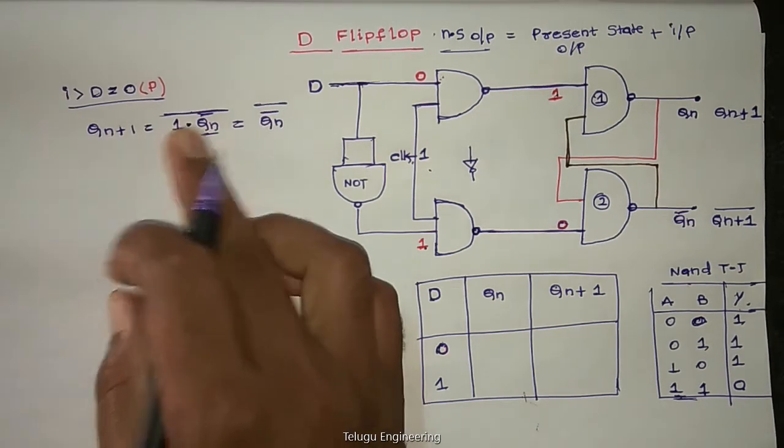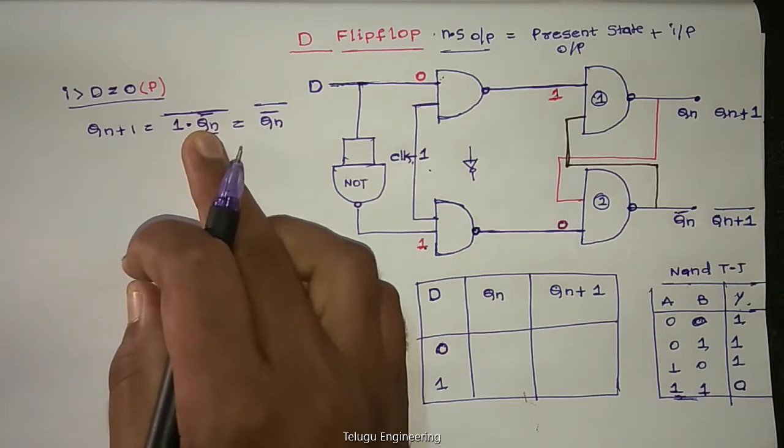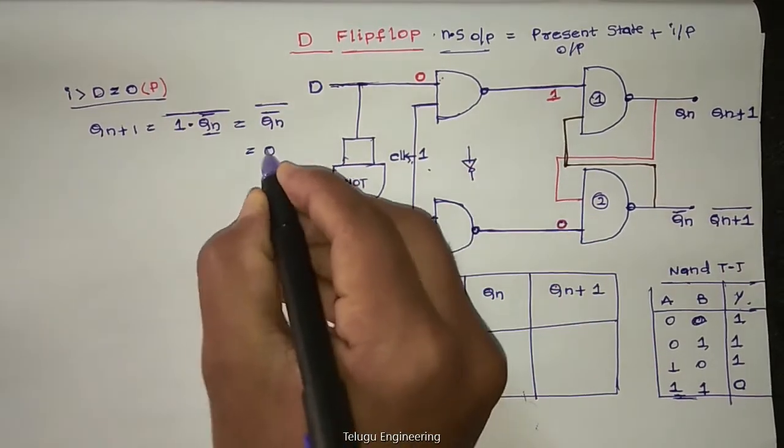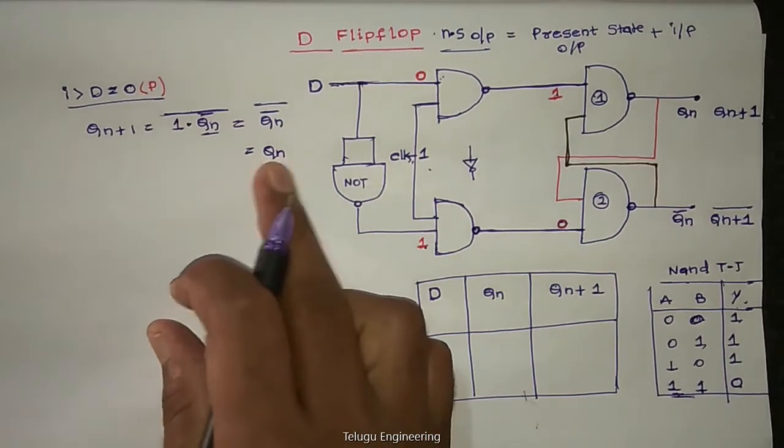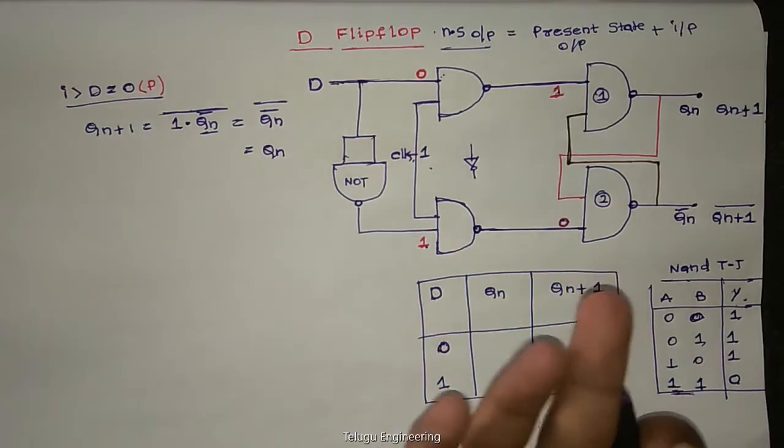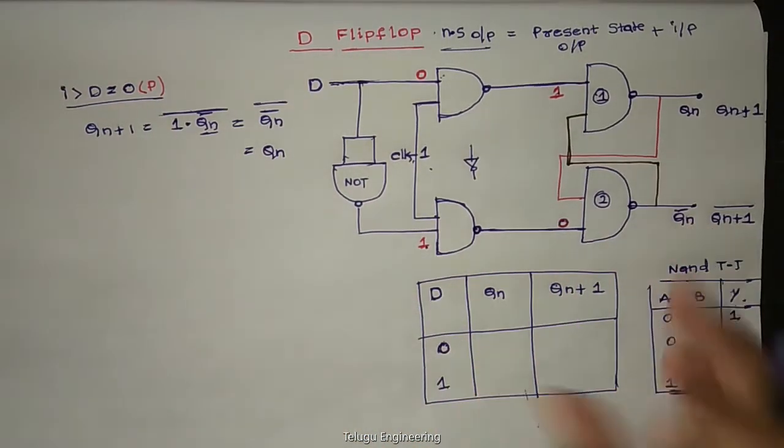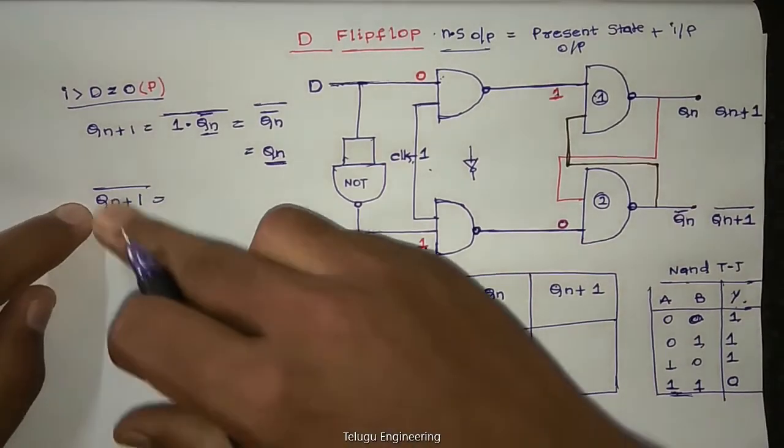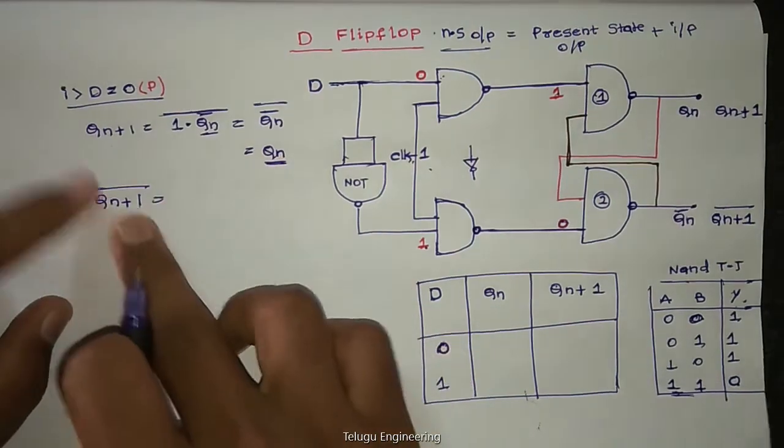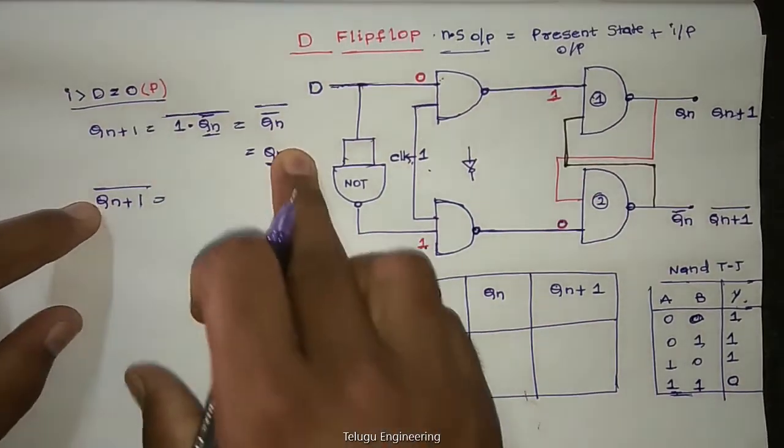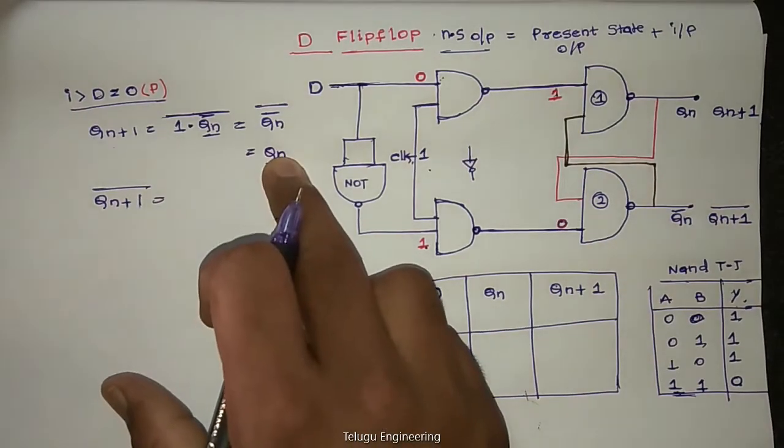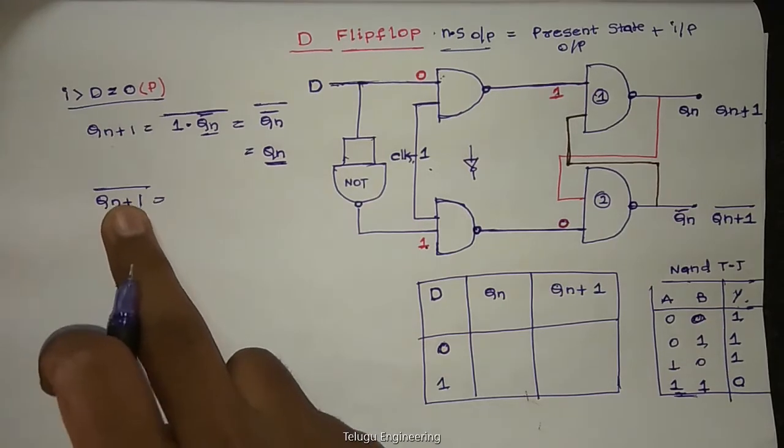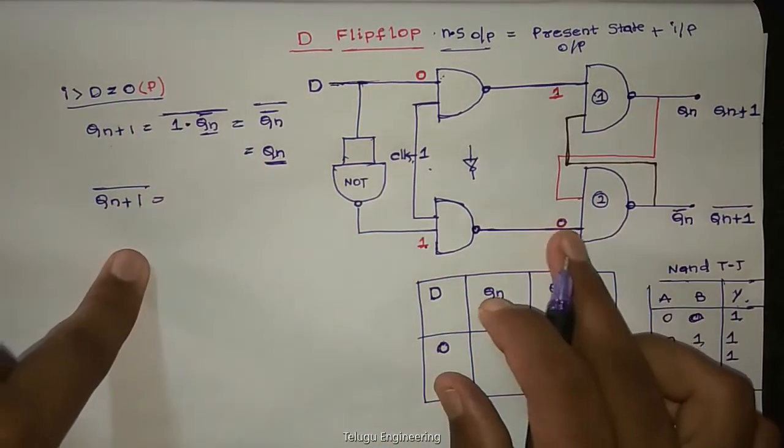So 1 into anything is nothing but this one only. In boolean algebra, AND of 1 and anything depends upon other thing, so 1 dot Qn bar equal to Qn bar. Complement, so this is equal to Qn. So our output Qn+1 equal to Qn.